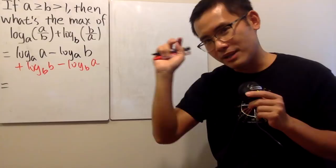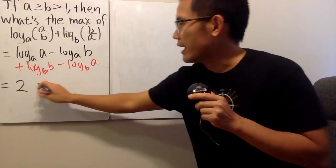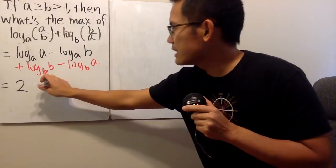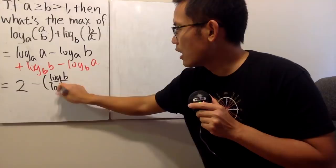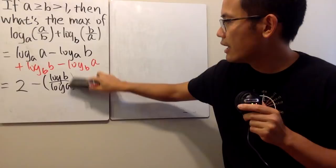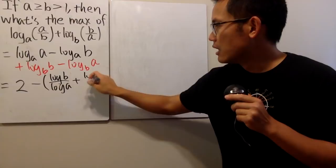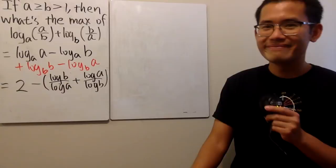Log base a of a is one, and log base b of b is also one, so one plus one is two. Both of the remaining terms are negative, so I'll factor that out. For the remaining terms, I'll use the change of base formula: log base a of b equals log b over log a, and log base b of a equals log a over log b, where the base can be any log.